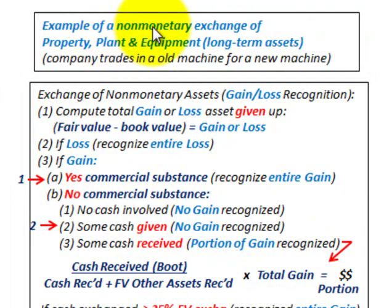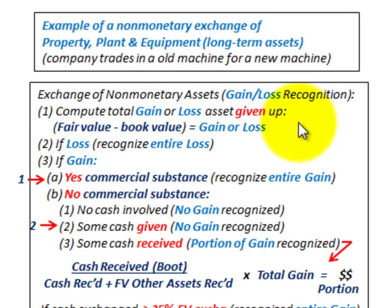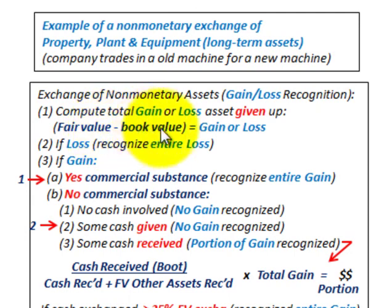We're going to be looking at an example of a non-monetary exchange of property, plant and equipment or long-term assets. Our example is where a company trades in an old machine for a new machine with some cash involved. The first thing we have to do is determine the rules on this exchange of non-monetary assets. We compute any total gain or loss based on the asset given up — that's the fair value of the asset less its book value.